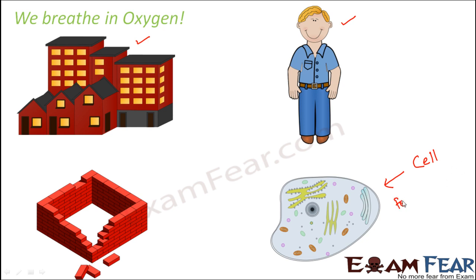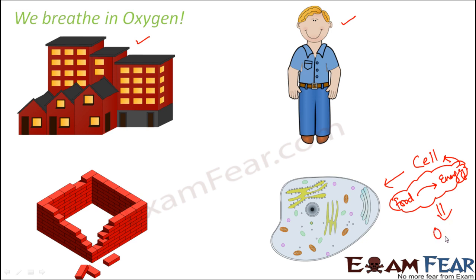Inside each and every cell, the food which we eat gets converted into energy. That energy gives the cell the power to perform all its activities. Now each and every cell of our body needs energy, so each and every cell needs food. And inside the cell, in order for food to get converted into energy, the cells need oxygen. So oxygen plays a very important role in generating energy from food inside the cell. Each and every cell inside our body needs oxygen, because only when they have oxygen will they be able to generate energy from food.